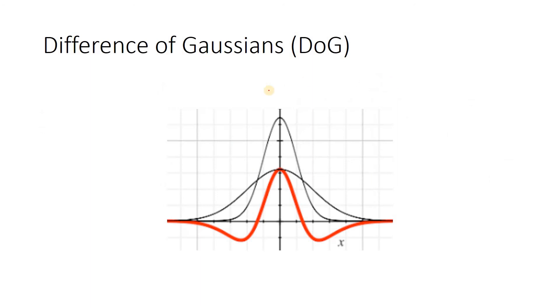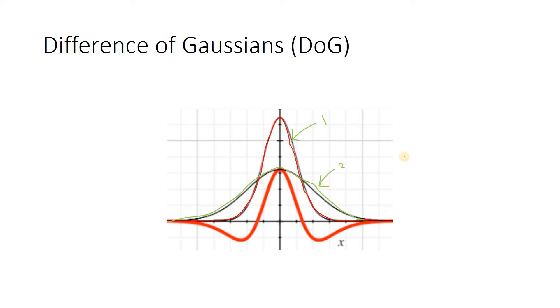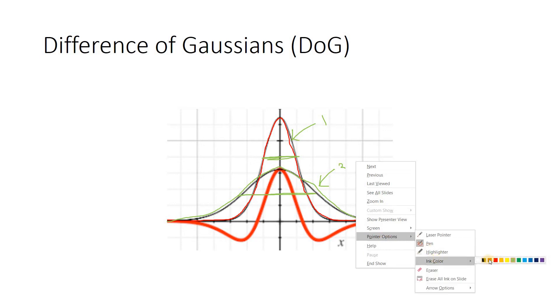Now consider Difference of Gaussian. Let us consider two Gaussian signals. One is this Gaussian, which I am plotting using red color now. Observe the mouse pointer. And let us consider another Gaussian, this one. What is the difference? Consider this particular first Gaussian as one and second Gaussian as two. One is having lesser standard deviation, whereas the second signal is having more standard deviation. That's why it is flattened here.